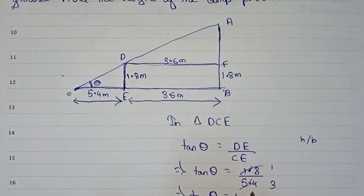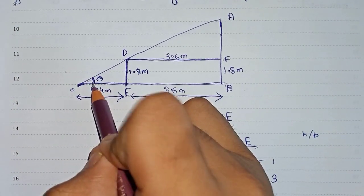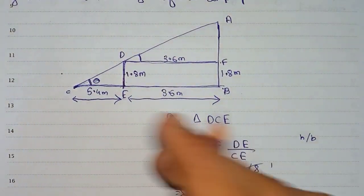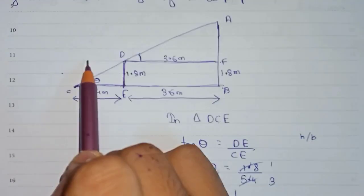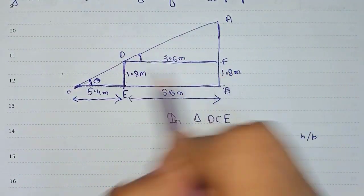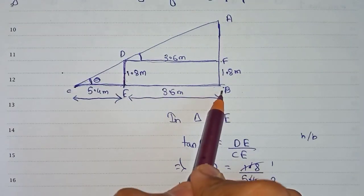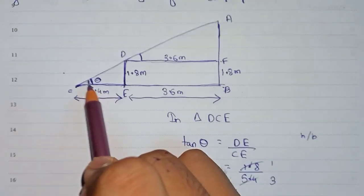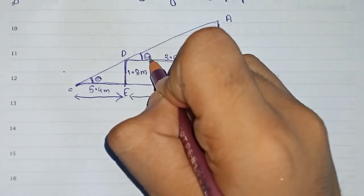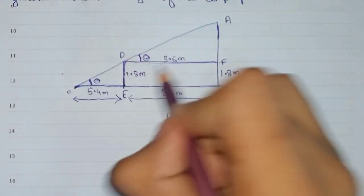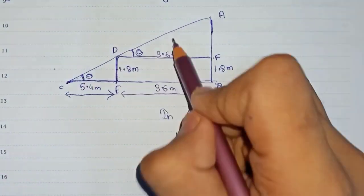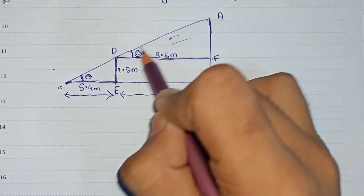Now if we look carefully at the diagram, this angle and this angle will be equal, since these two lines are parallel. Therefore, angle ADF and angle DCE are equal. So this theta is equal to this theta, meaning theta equals 1/3 here as well. Therefore, we will now take triangle ADF.